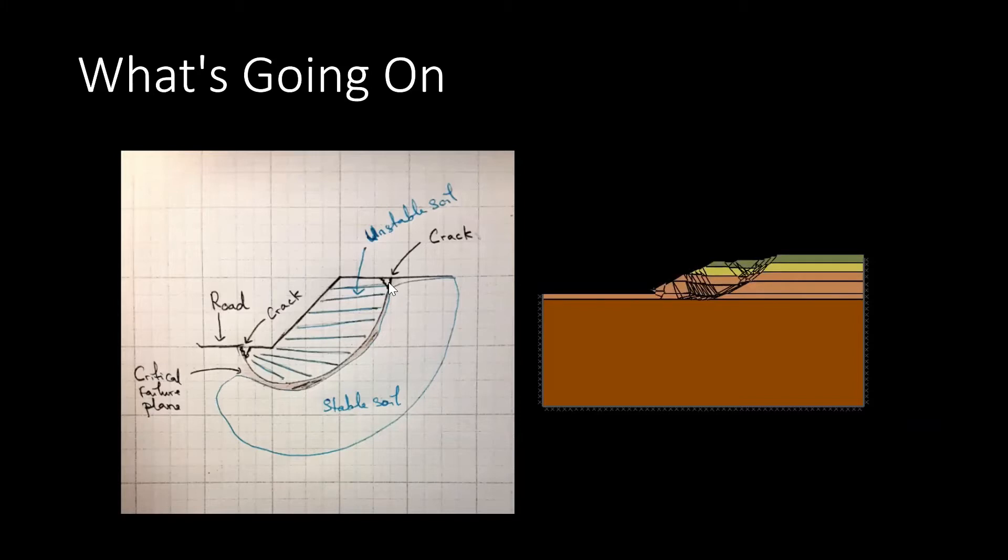We can see the cracks at the top and at the bottom of that slope. This area is where the unstable slope is moving. Right in between the unstable soil and the stable soil, we have the critical failure plane.